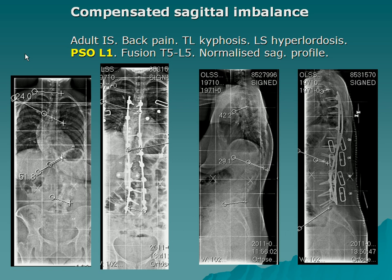Here is a case of compensated sagittal imbalance — adult idiopathic scoliosis with back pain. You can start to recognize these patients: thoracolumbar kyphosis and lumbosacral hyperlordosis. A PSO on L1 was done with fusion T5 to L5. In the postoperative image you can see normalization of the sacrum — a more horizontal sacrum. The lumbosacral lordosis actually decreased, but the upper lumbar lordosis increased significantly, the thoracic kyphosis increased because there was no longer any need for compensation, and overall spinal alignment normalized.